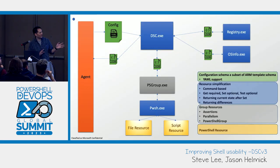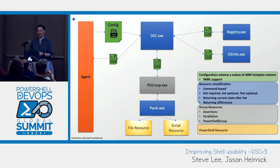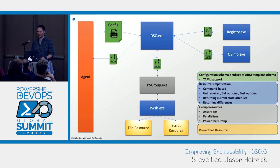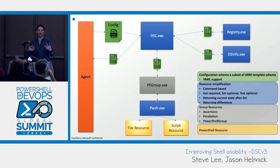This architecture slide shows on the left side the agent — this could be your PowerShell script in Task Scheduler, Ansible, Chef, Puppet, Machine Config, or others. The end user provides that agent with the desired state configuration document. That gets fed into DSC.exe. DSC.exe parses this and determines: there are parts of the configuration that require native resources — just executables — and parts that require PowerShell resources. As the end user you can leverage both types.